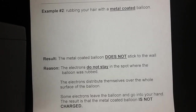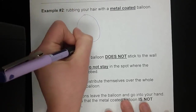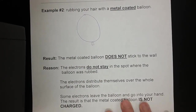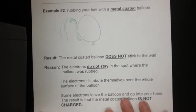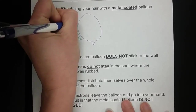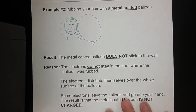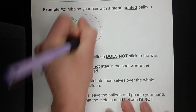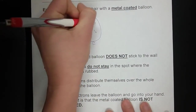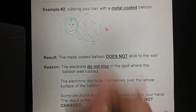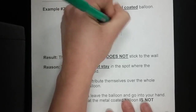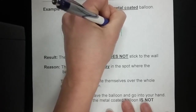If you had a balloon coated in metal — like a mylar-type balloon — and your balloon rubs against your hair, when it rubs against your head, those negatives will still transfer over.